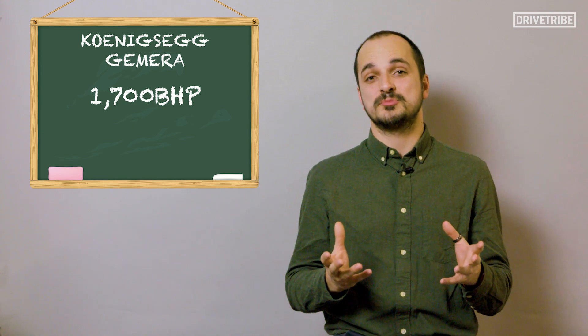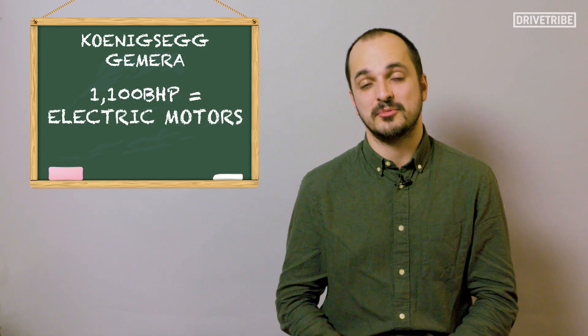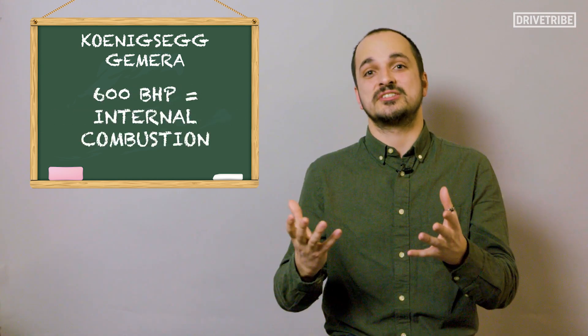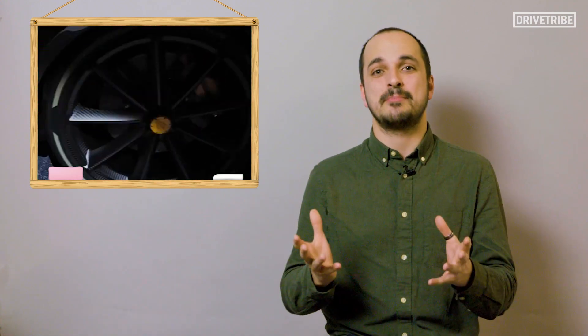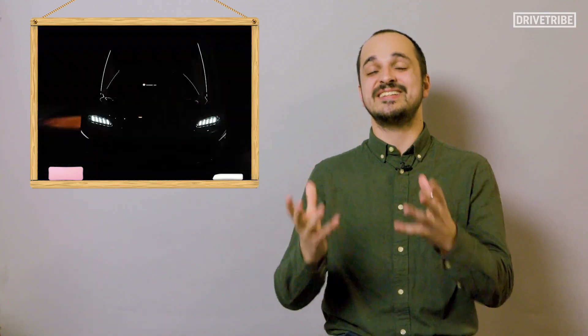It creates 1,700 horsepower, 1,100 of which comes from electric motors, and the other 600 comes from internal combustion. But the kicker is, that 600 horsepower doesn't come from some high-capacity turbocharged V8 like normal Koenigseggs. This 600 horsepower comes from a three-cylinder engine.